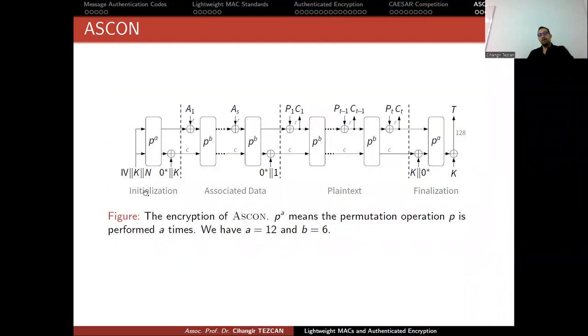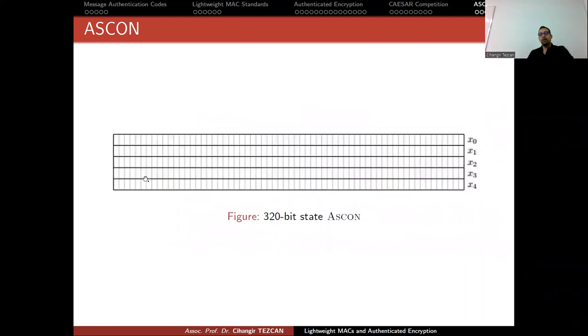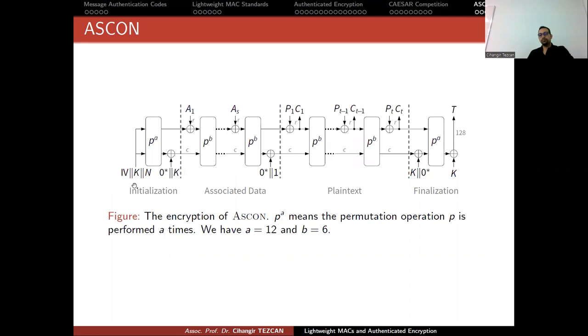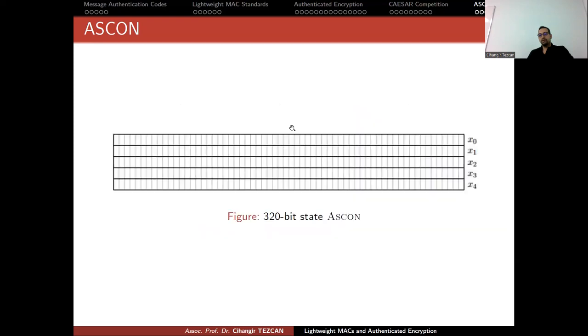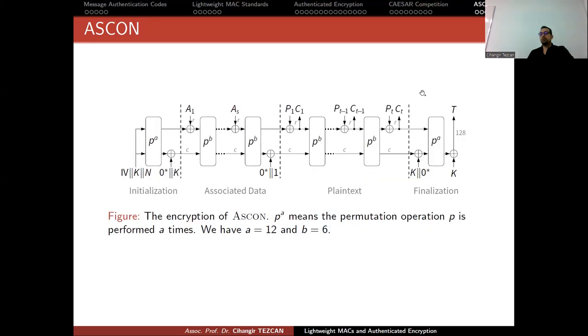For instance, recall that our initialization started with IV concatenated with key and concatenated with nonce. So IV is 64-bit, you write it at the top row. Your key is 128-bit, you write it to these two rows, and you write your nonce to these two rows. You perform these operations. Whenever you want to produce ciphertext, you divide your plaintext into 64-bit blocks, you XOR it with the top row and produce the output as ciphertext block. Repeat this process again on the internal state here. Then again take the next block and provide the ciphertext.